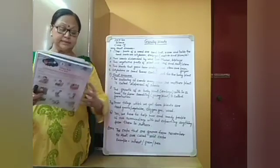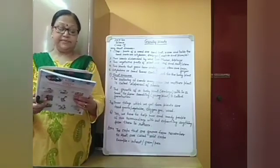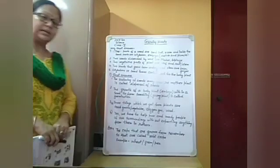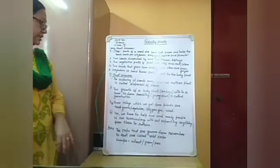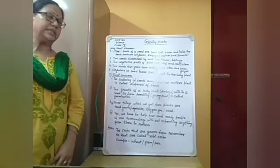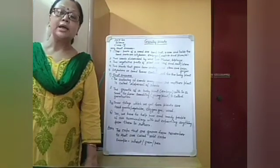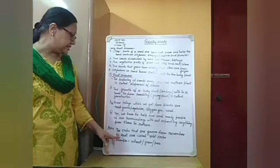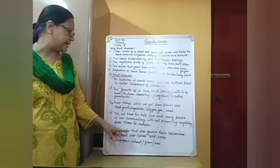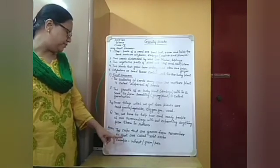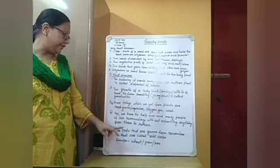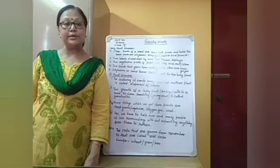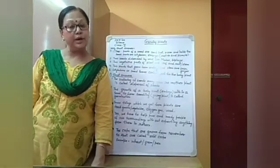Next question: what are rabi crops? Give one example. Rabi crops are those crops which are grown from November to April. Example: wheat, gram, or peas — you have to write only one example.